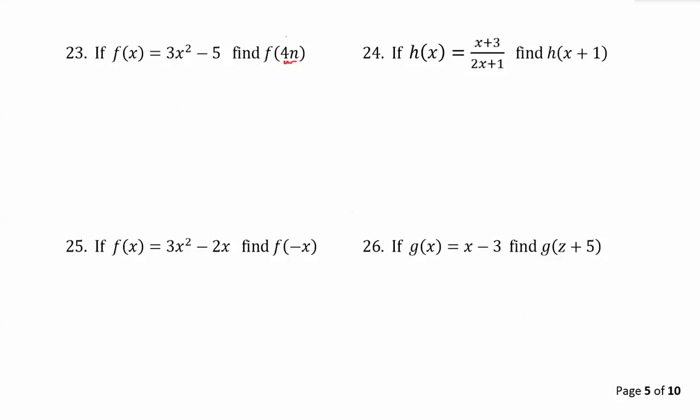This time we want to change all of the x's in the function to 4n's. So f of 4n, instead of 3 times x squared minus 5, we get 3 times something squared minus 5. We switch out the x with the 4n.